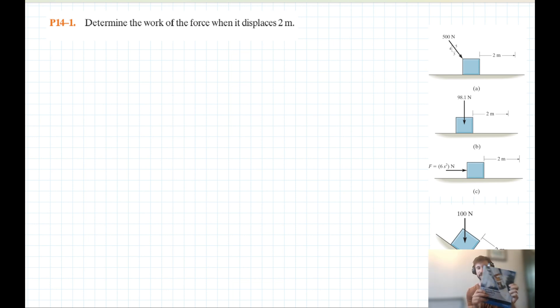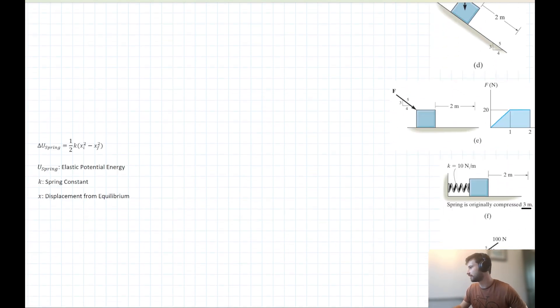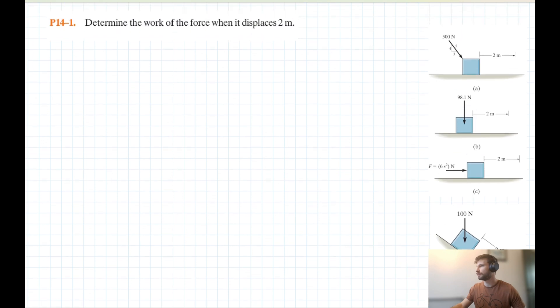Hello and welcome to this video tutorial for R.C. Hibbeler's Dynamics textbook. We have this set of problems from chapter 14 here. There's seven parts to this problem, A, B, C, D, E, F and G. I'm going to go through all of them in this video. Before we get into them, let's establish what we mean by work, since the question is asking, determine the work of the force when it displaces two meters. We can take work to be the product of the force acting on an object times the distance that it travels in a particular direction. So this is a key idea here.